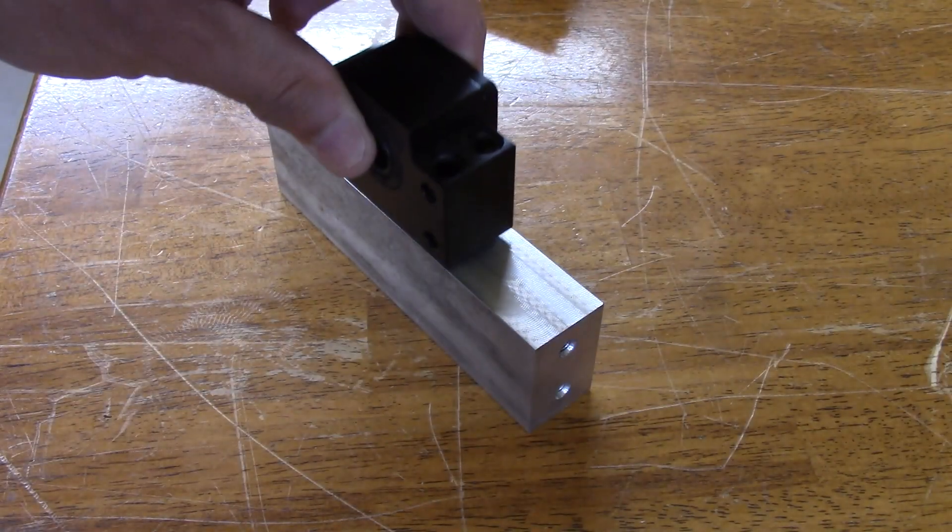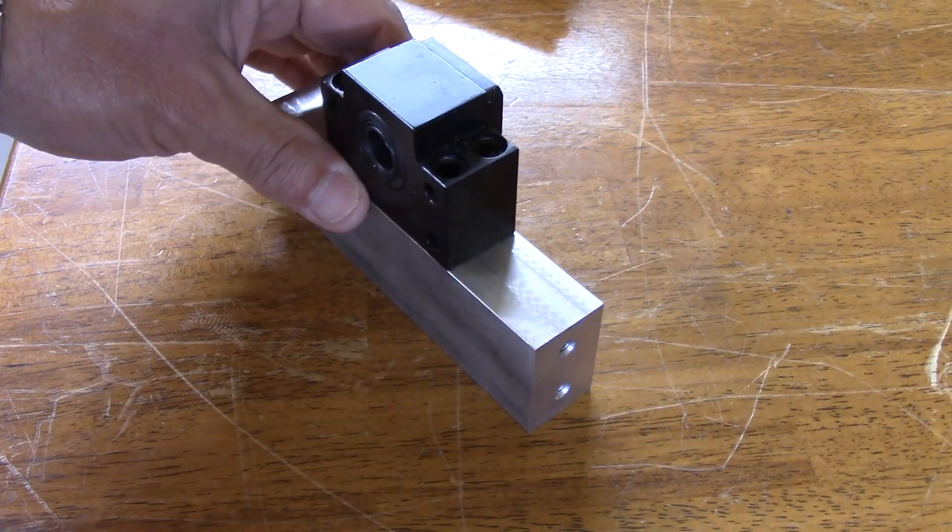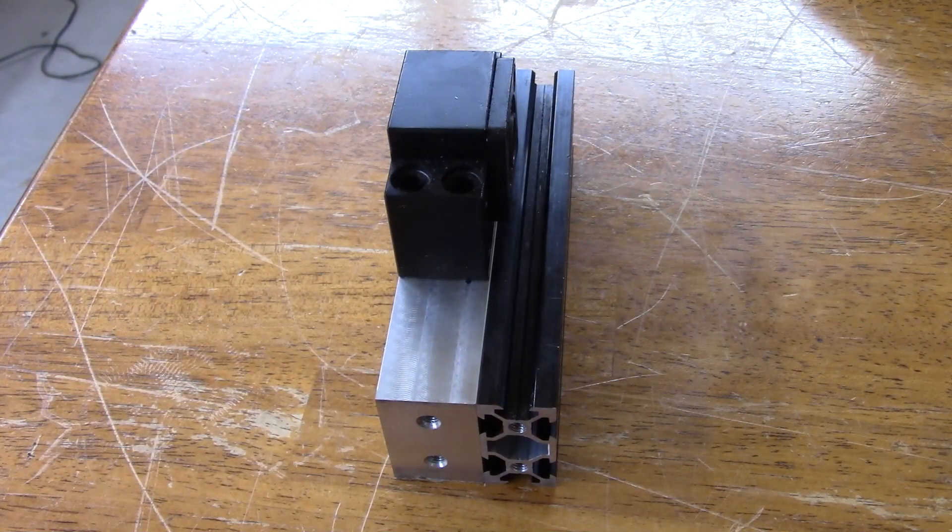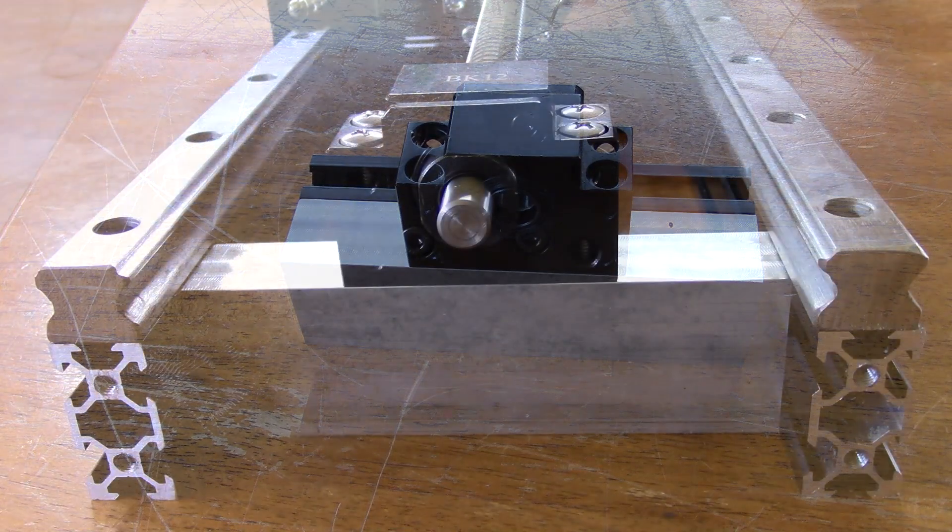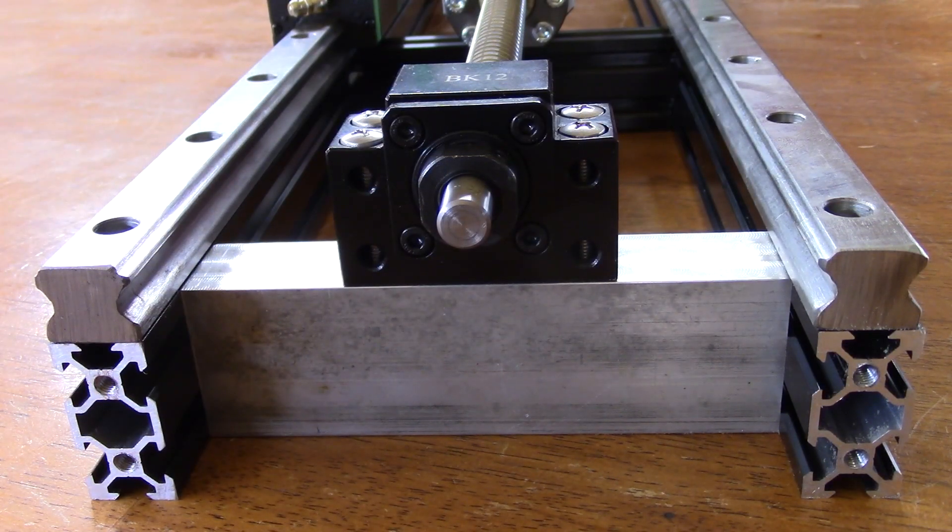This is why a special aluminum block had to be designed. The width is exactly the same as the BK12, the length the same as the struts, and the thread spacing perfect so the lead screw is exactly in center.